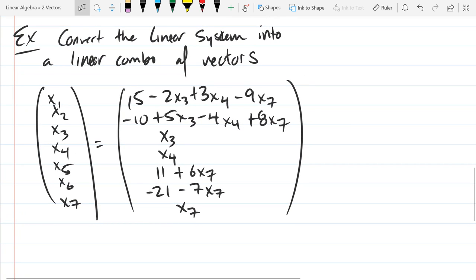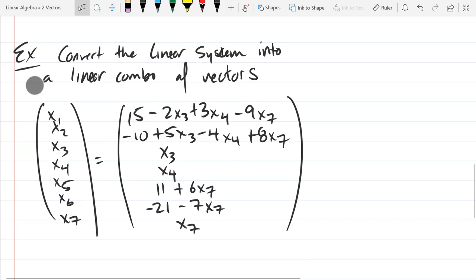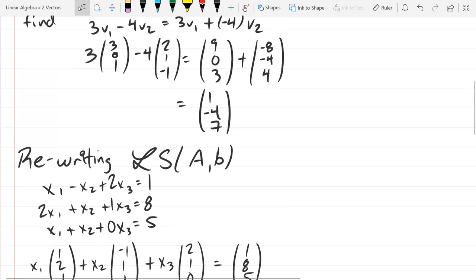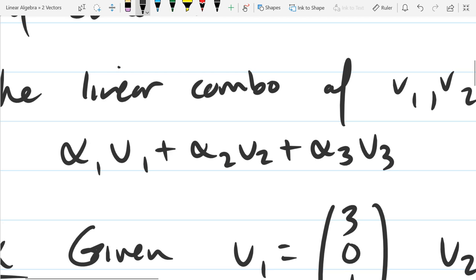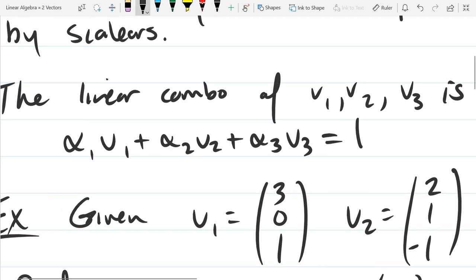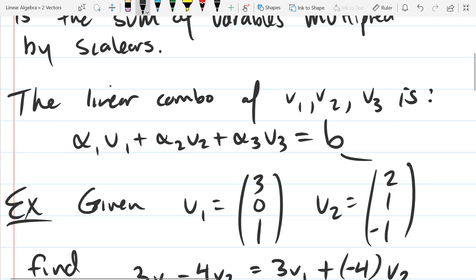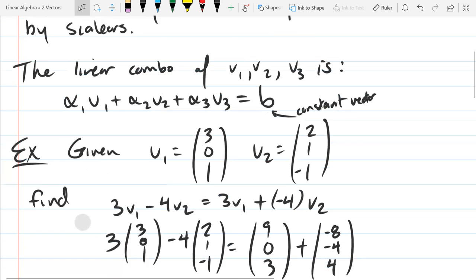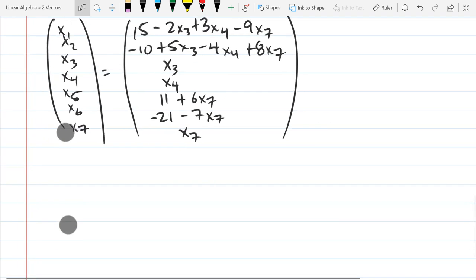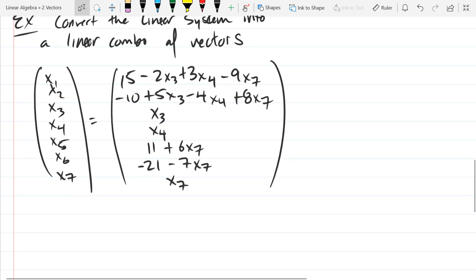This is not written as a linear combination of vectors. Let's look at what a linear combination of vectors is going to look like. We're going to have a vector times a scalar plus a vector times a scalar plus a vector times a scalar. And this is supposed to equal a vector. We'll put a vector on the right side. The vector on the right side is supposed to be just a constant vector. I'm using the letter b for constant vector. We have seven variables, so it's going to look like seven variables and seven constants.